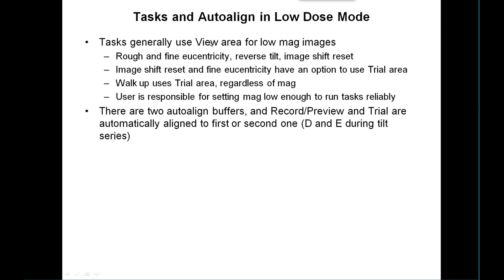There are starting discussions about whether it makes sense to do walk-ups with view instead in some cases. When using view, the assumption is that the user has set it up with low enough mag to run these tasks reliably. Low enough mag usually translates into a certain image field of view for the view area — most tasks will run with a field of view of at least five microns, and rough eucentricity requires eight microns.